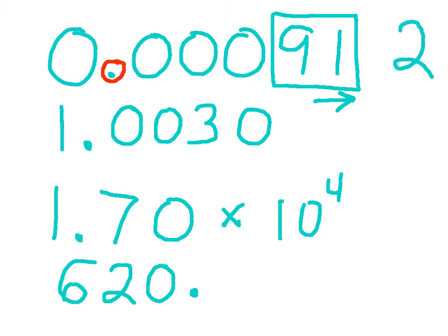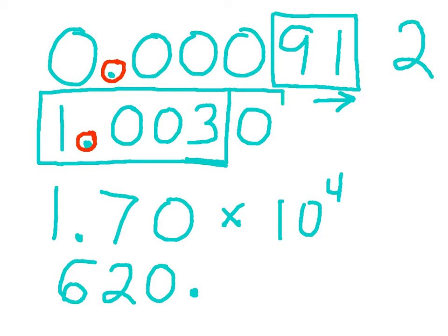Next example, 1.0030. Our leftmost and rightmost non-zero digits are the 1 and the 3, so we include those within a box. There is, in fact, a dot. Even though it's within the box, that does not change the rule. So we include all numbers to the right of the existing box, and count the numbers within the boxes. In this example, there are a total of 5 significant figures.